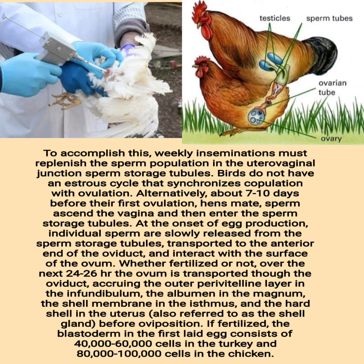About 7 to 10 days before their first ovulation, hens mate and sperm ascend the vagina and then enter the sperm storage tubules. At the onset of egg production, individual sperm are slowly released from the sperm storage tubules, transported to the anterior end of the oviduct, and interact with the surface of the ovum.